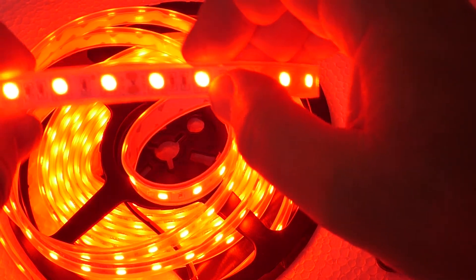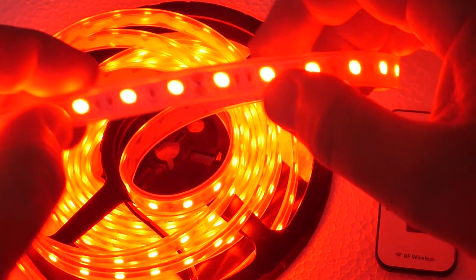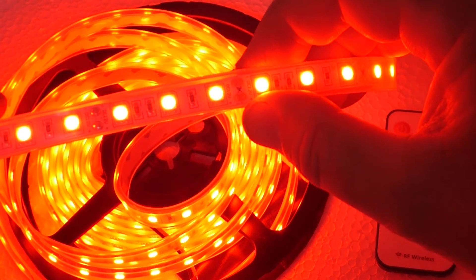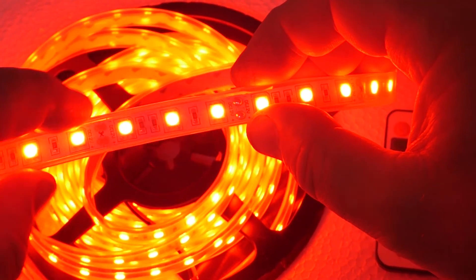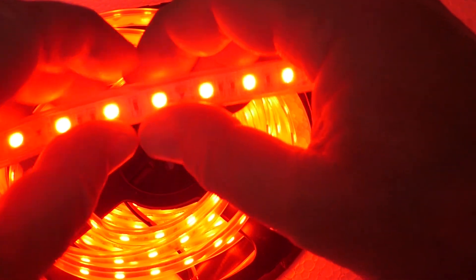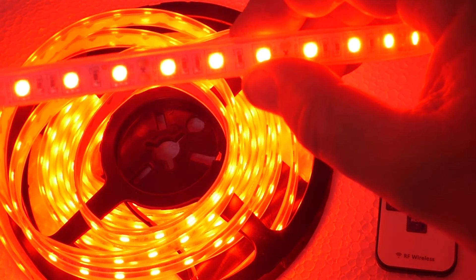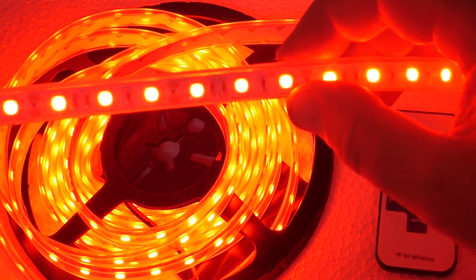The strip is easy to cut if you need to cut it down to size. Just follow the marks on the LED strip. But be sure to reseal the strip with silicon that's available at Bunnings or any hardware store.